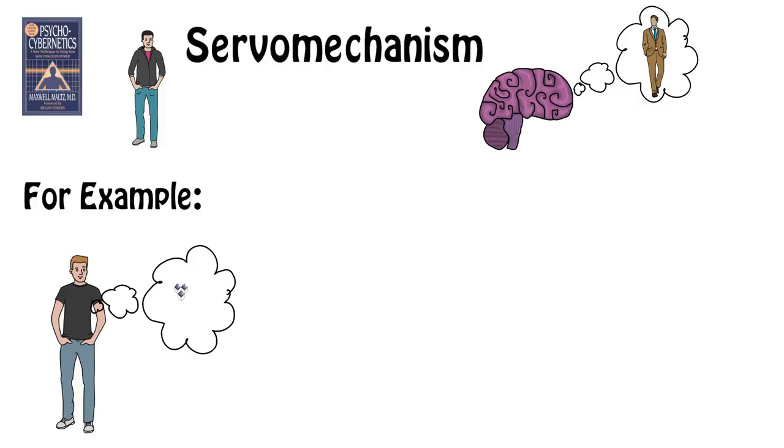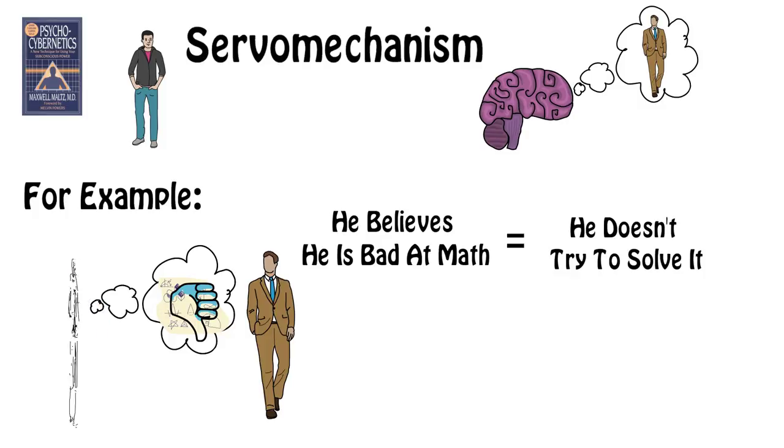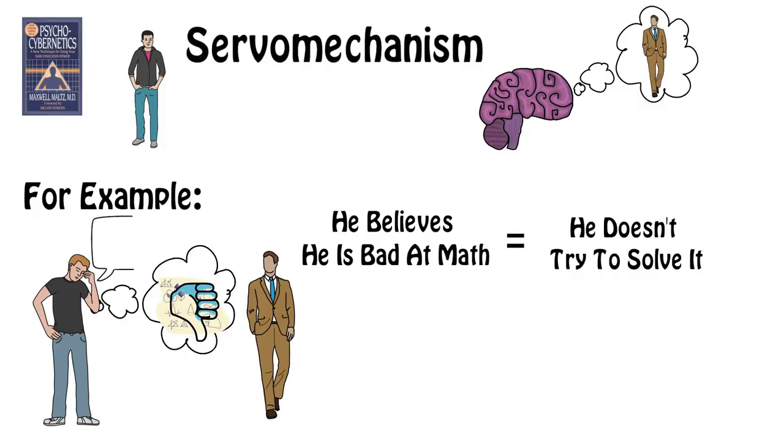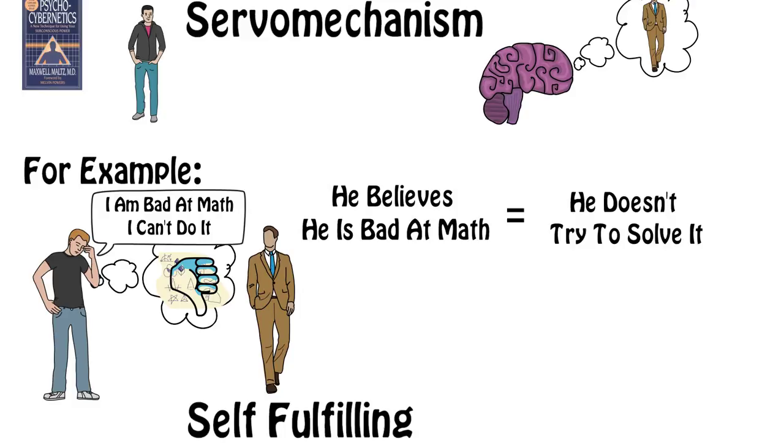Let's say that a person grew up thinking he was bad at math. That became part of his self-image. So this person truly believes he's bad at math. Even though he's more than capable of solving the problems, he might even know how to solve the problems, but he might feel overwhelmed when something seems slightly too complicated and then becomes unable to solve them by saying that he is just bad at math and he can't do it. This feeds the mental image that he's bad at math. Many people call this the self-fulfilling prophecy.